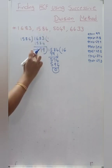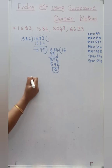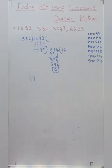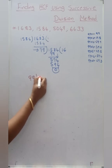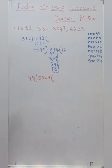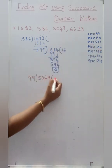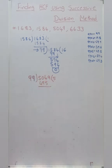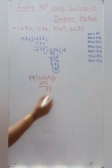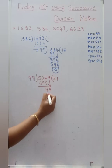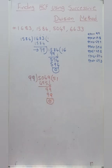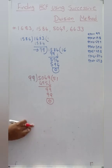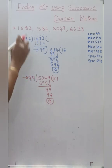Now we have to take the HCF of these two numbers, which is 99, and divide the third number. That number is 504. The nearest number is 5 times, which is 495. We are getting 99 here. So 99 one time, and remainder is 0. In this case, by the first time only we got 0 as remainder. Sometimes the process continues further. So 99 is HCF of these three numbers.